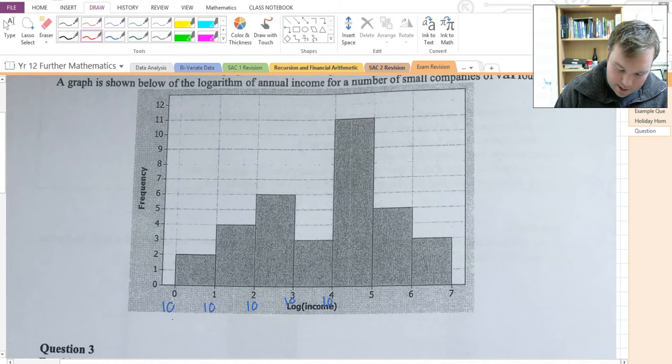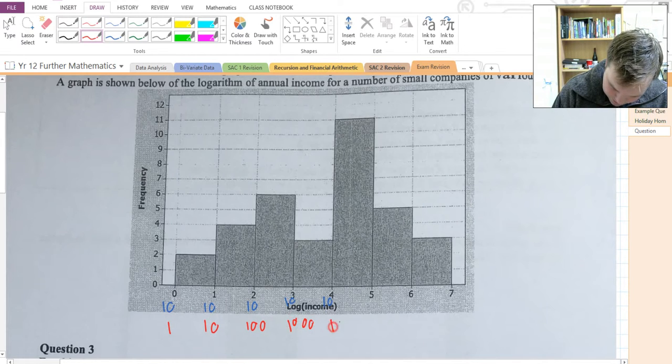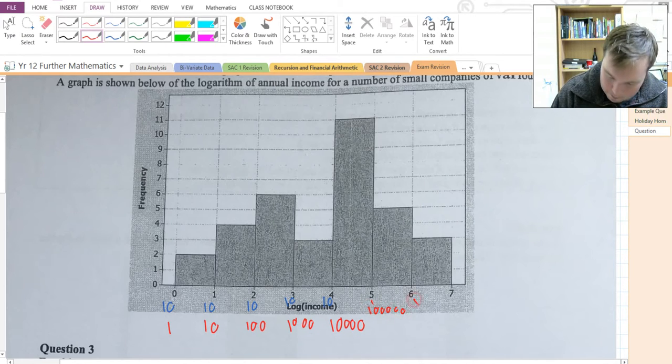these numbers look like 1, 10, 100, 1000, 10,000, 100,000, 1,000,000, 10,000,000.